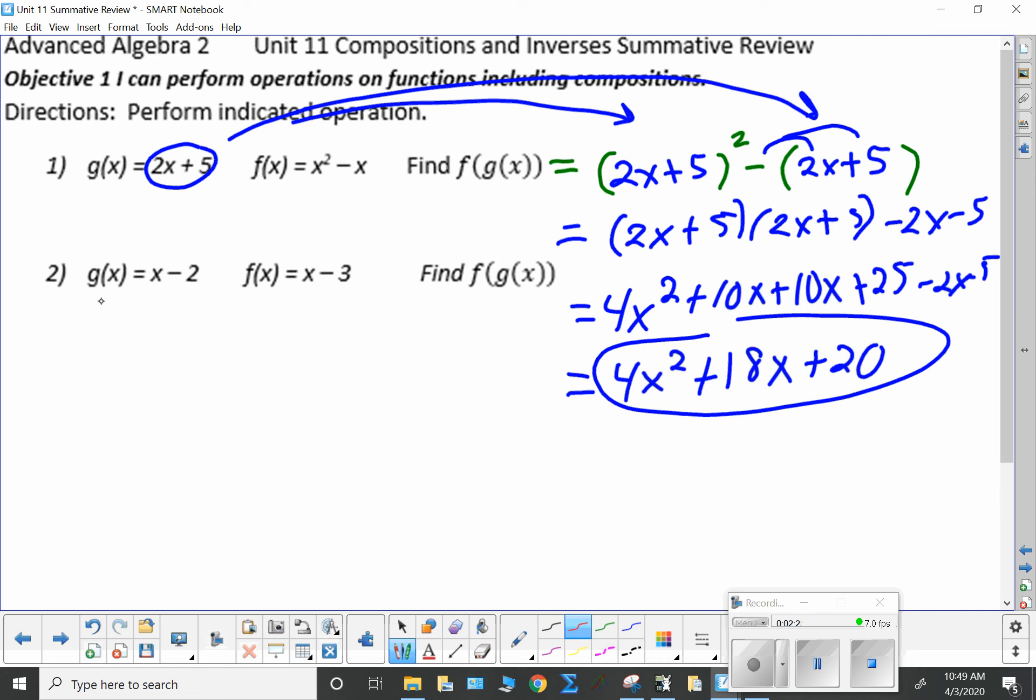Next one up, number 2. f of g of x. So this is going to be f of g of x. I'm just going to color coordinate it like that. f of x is x minus 3. While the g of x is x minus 2. And notice here we can simply remove the parentheses and you have x minus 5. And you're done.